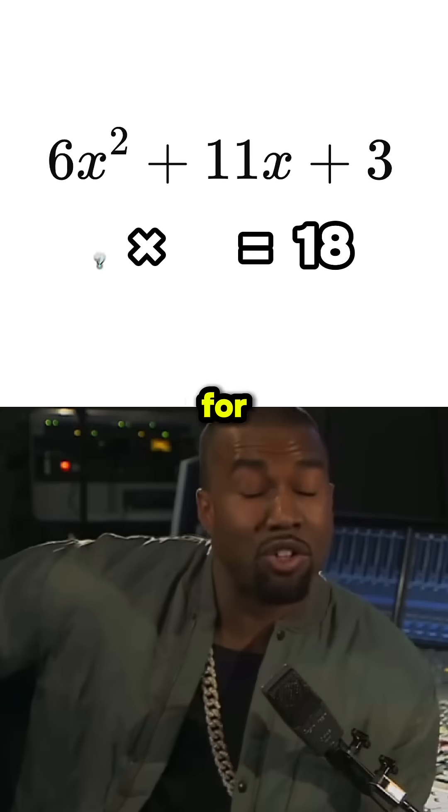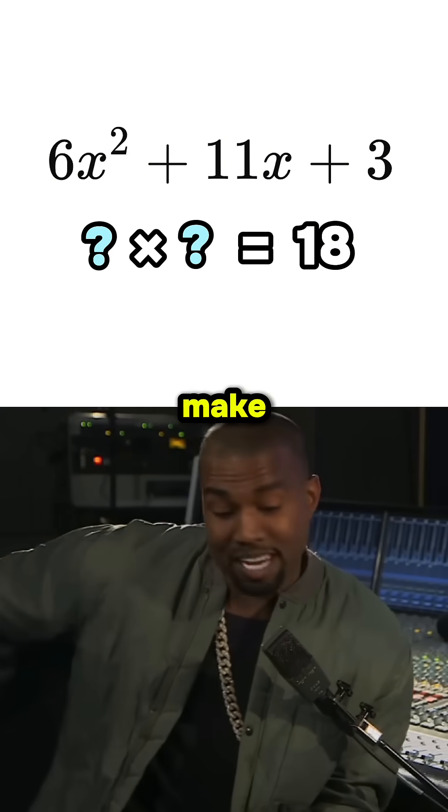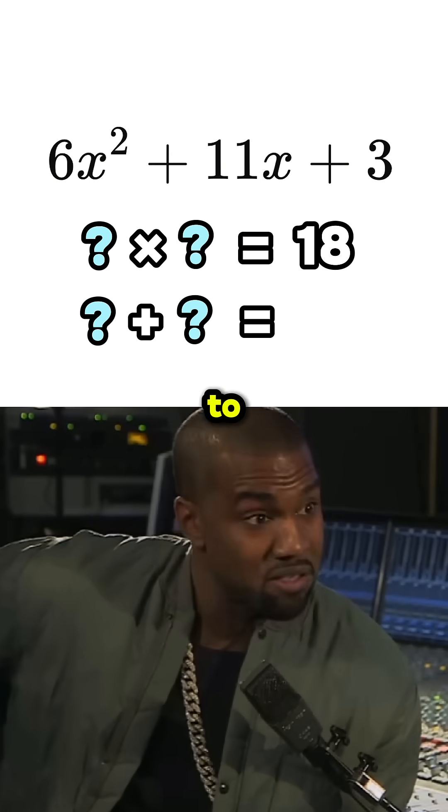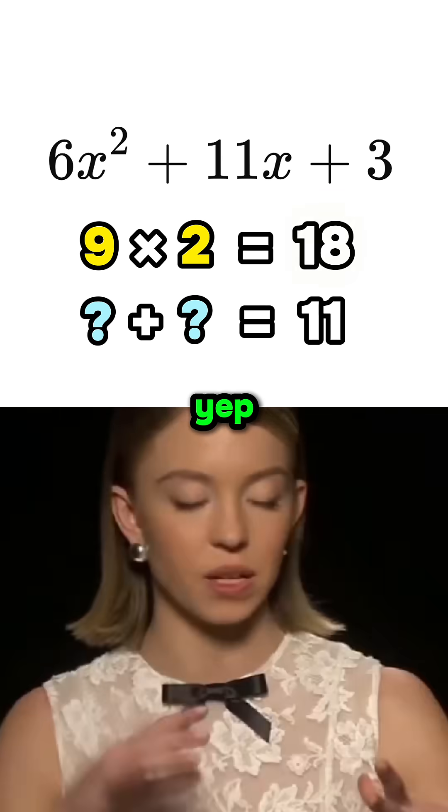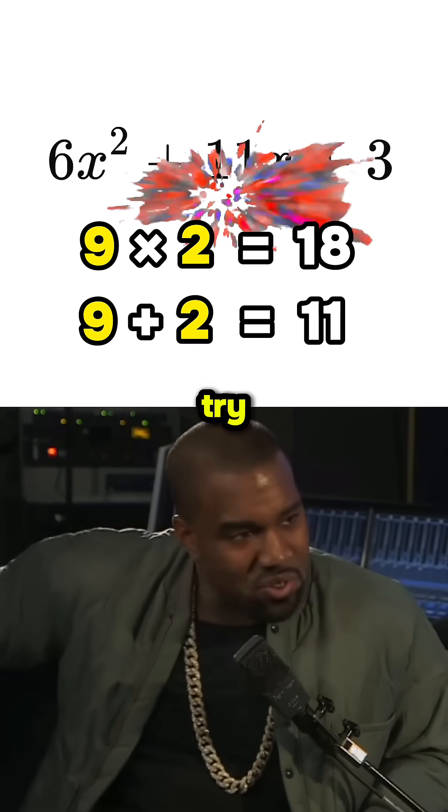Nice. Now we want to look for two numbers that times together to make 18, but also add up to make 11. Okay, so 9 times 2 makes 18. Yep, and 9 plus 2. 11. We got it right on the first try.